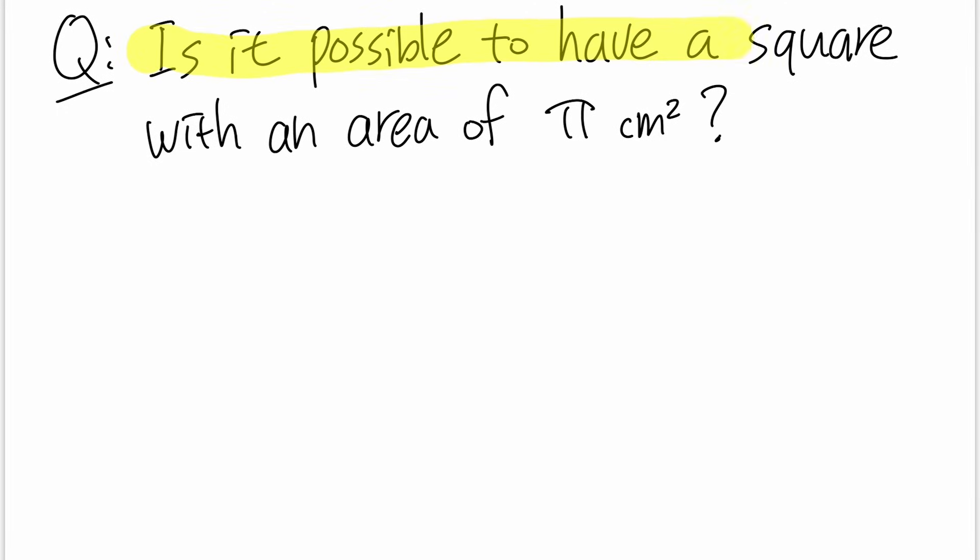The question is, is it possible to have a square with an area of π? This is kind of weird because usually when we are talking about π we are dealing with circles, right? So let's take a quick look. When we have a circle like this, if we want the area to be π, how can we make it happen?